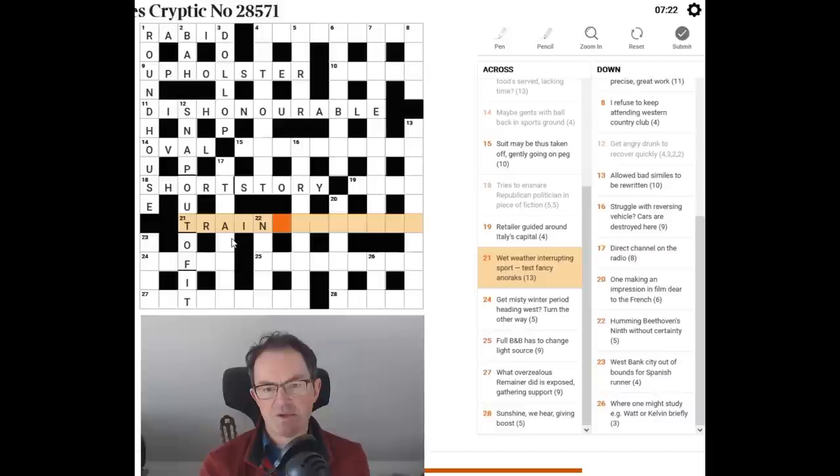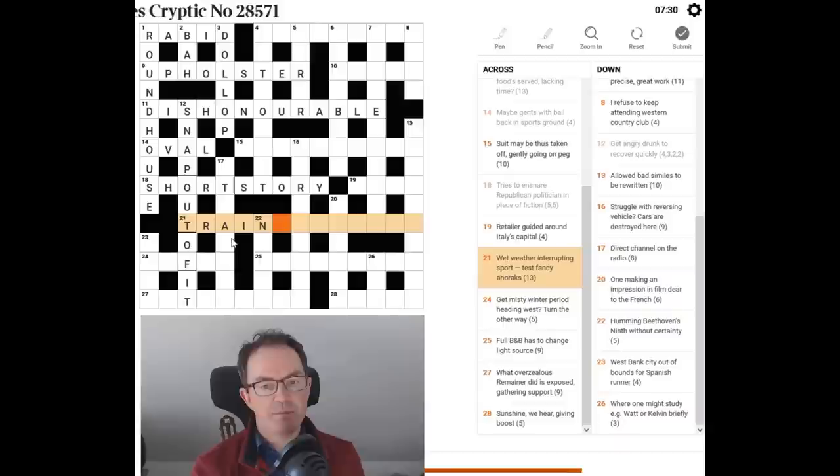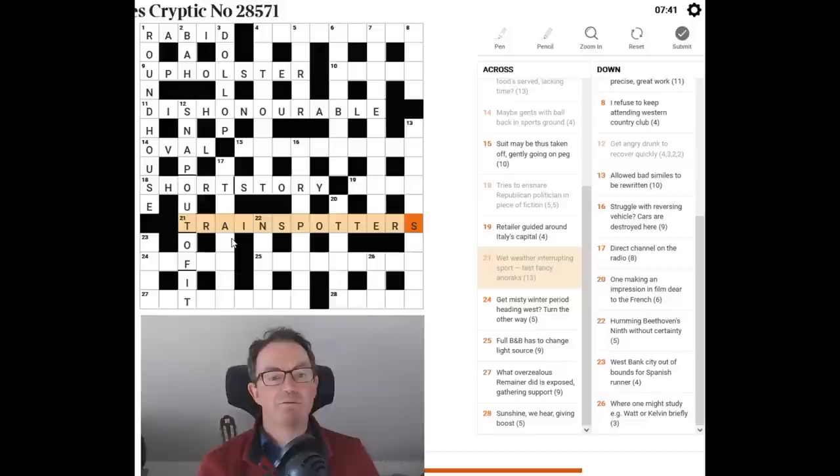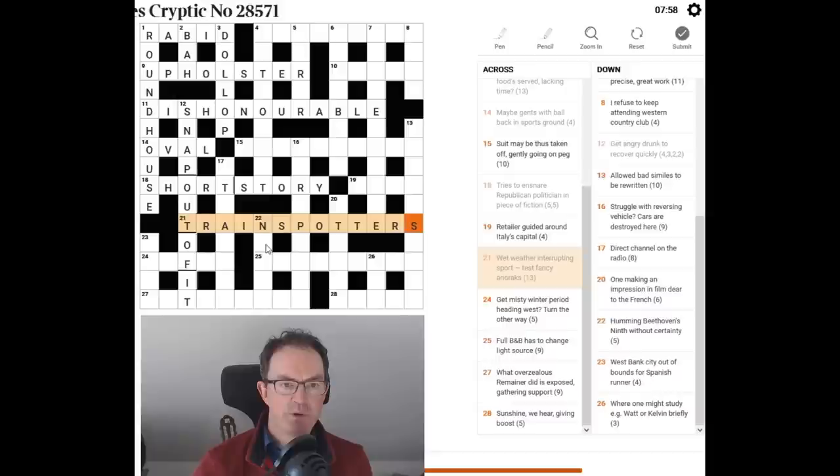Interrupting. Sport. Test. Fancy. It's train spotters. Okay. Sport. So fancy. If you. It is an anagram indicator. It's saying if you make the letters of sport test fancy you would you'd dole them up in a way and you would potentially sort of rearrange them. And so if we anagram sport test and put wet weather rain in the middle we get train spotters who are anorax nerds. One of our own brethren.